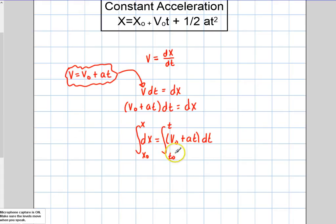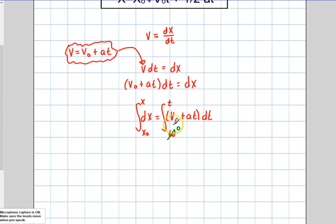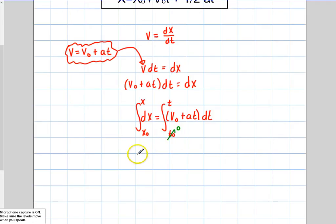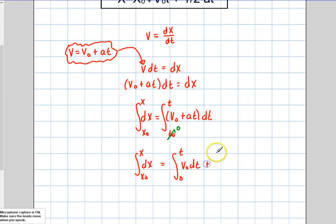A lot of times you'll see people set the initial time equal to zero, so we'll go ahead and do that. You can also leave it in and just use delta t — it's the same thing. I want to take a definite integral because I don't want to end up with constants on each side that I'd have to evaluate using a boundary condition. So we always go from initial to final whenever possible. I can break this integral up on the right side into two sums: the integral from zero to t of v₀ dt, plus the integral from zero to t of at dt.